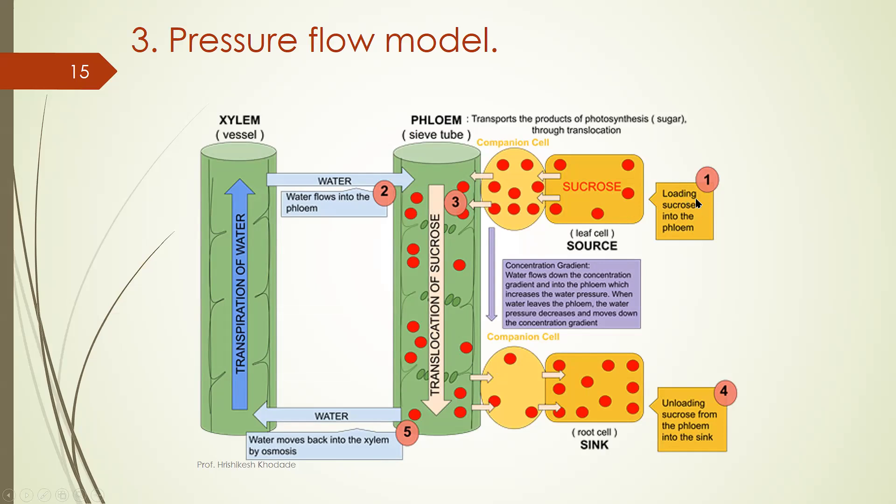So here what happens loading takes place at source. In loading process food material from the source to the sieve tube elements are transported and in unloading process food material from sieve tube element to the required area which is considered as sink. So at source loading takes place, at sink unloading takes place.